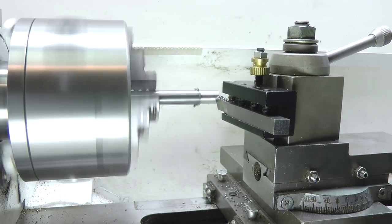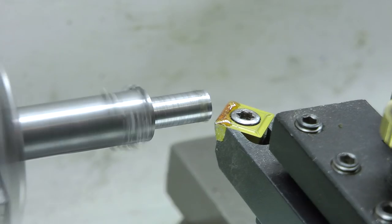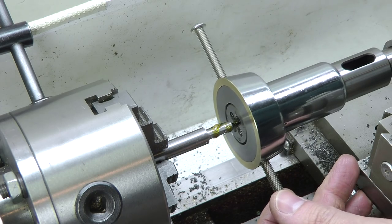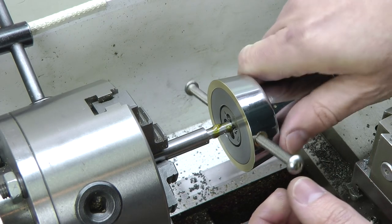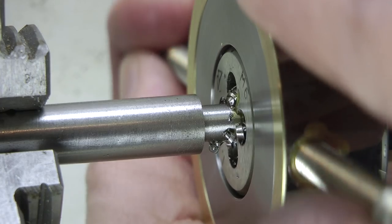Then I made a short handle. I turned down a piece of rod and threaded the end. This would have been easier with the tailstock die holder. Oh wait a minute.